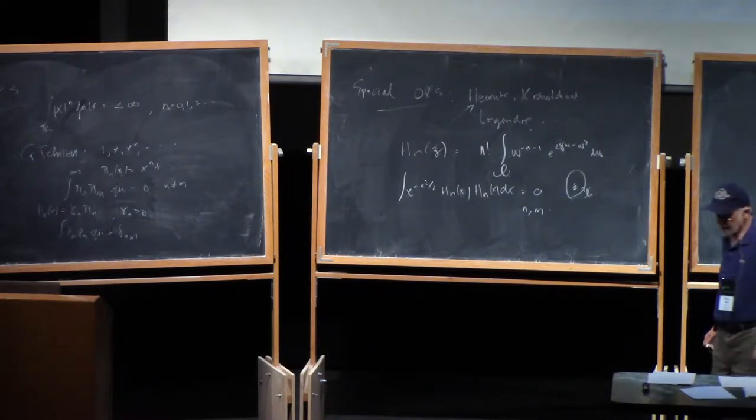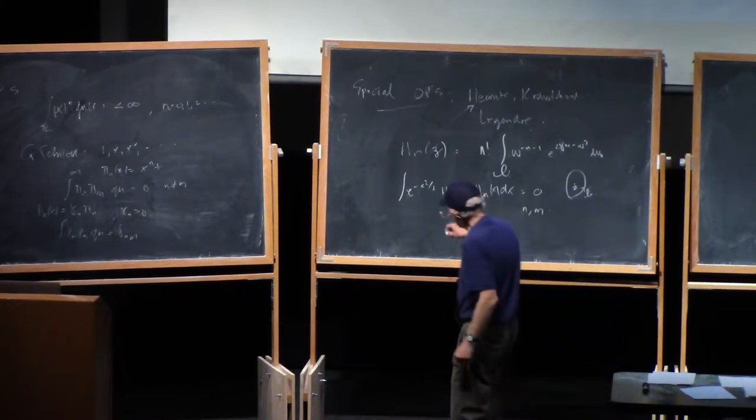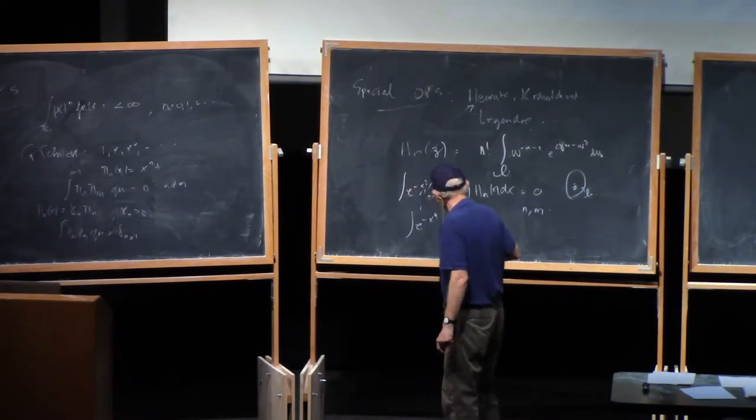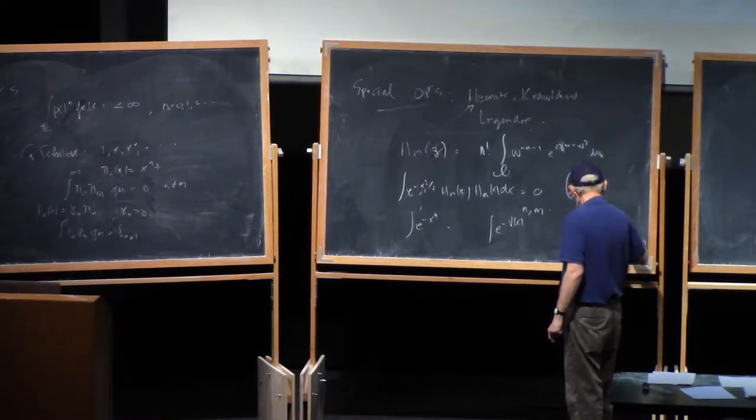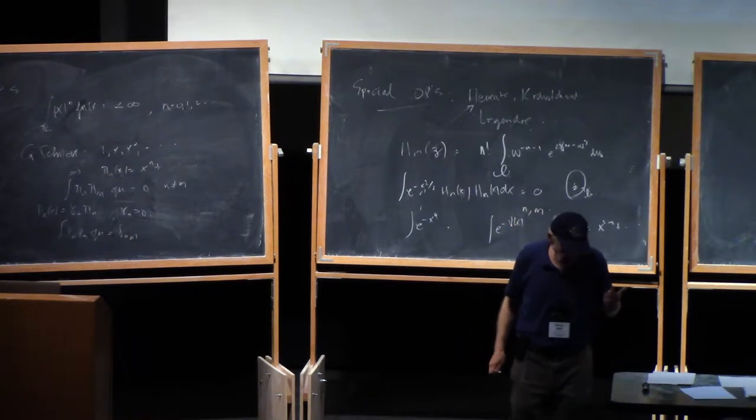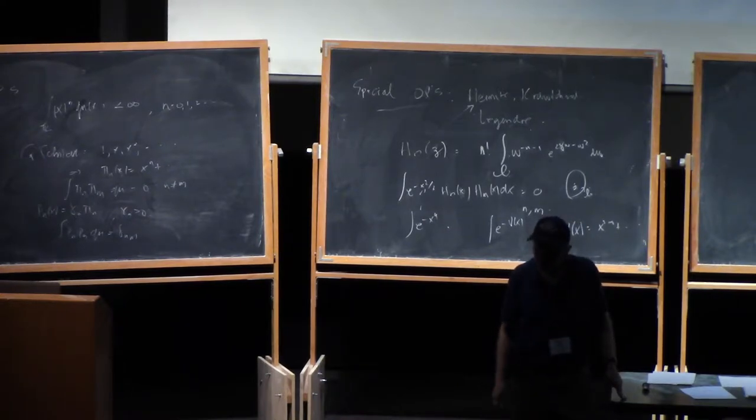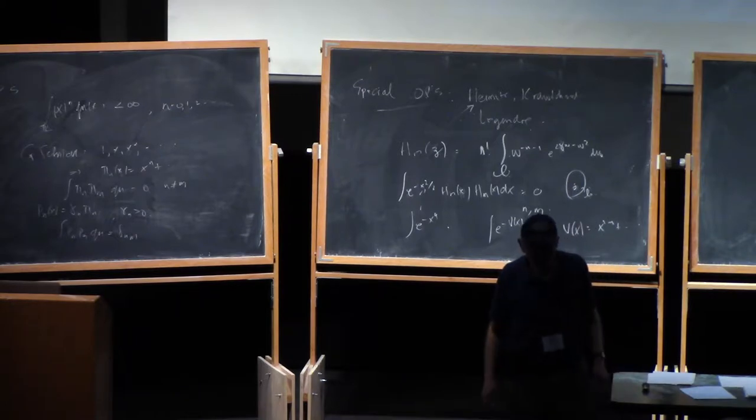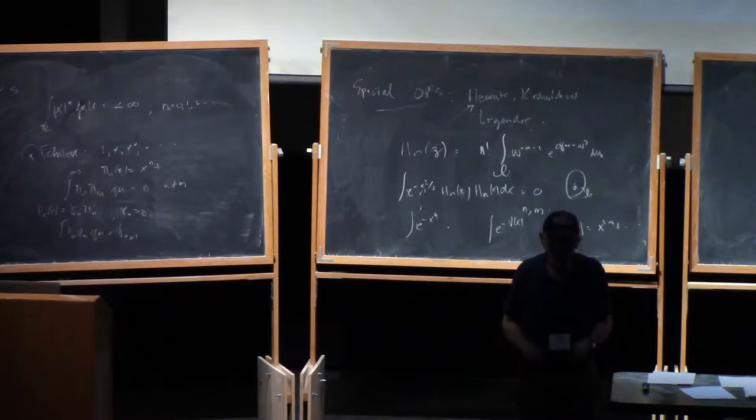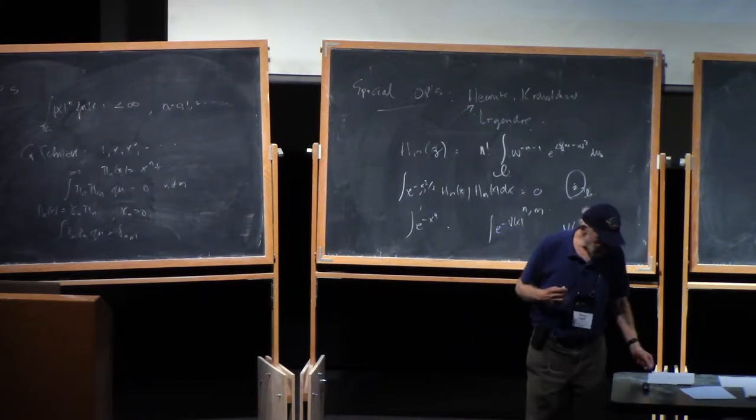Now people became interested in universality. The first work on universality was really for unitary ensembles. Instead of having this weight over here, you had a weight like e to the minus x to the fourth, or a weight like e to the minus v of x, where v of x is some polynomial, x to the 2m, and so on like this. For ensembles of this kind, you want to prove universality. This boils down, as we know, to a question about the asymptotics of the polynomials which are orthogonal with respect to such weights. Now for such weights, there is no known integral representation. So the question is, how are you going to obtain the asymptotic information that you need to prove universality in random matrix theory?